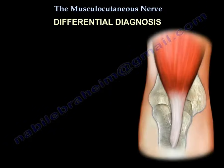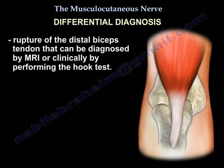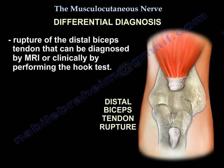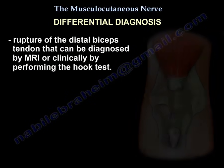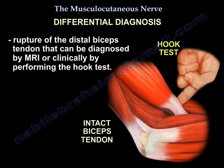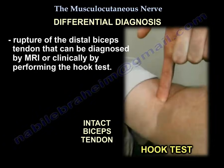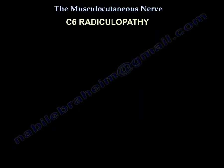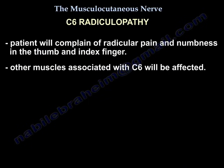Differential diagnosis: rupture of the distal biceps tendon, which can be diagnosed by MRI or clinically by the hook test. Also consider C6 radiculopathy, where the patient will complain of radicular pain and numbness in the thumb and index finger, and other C6 muscles will be affected.